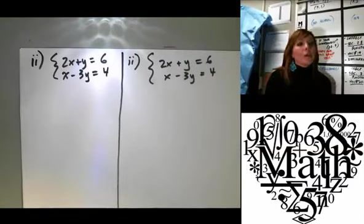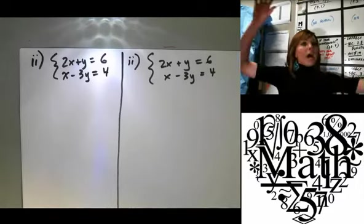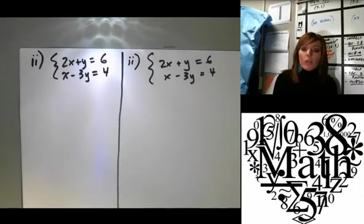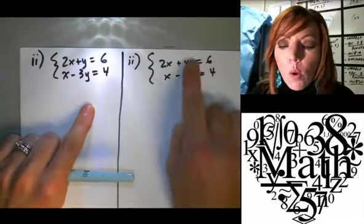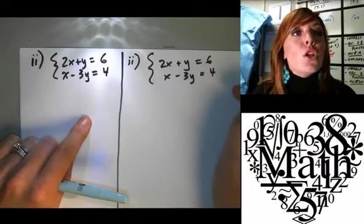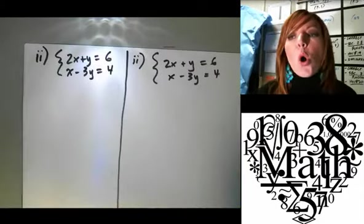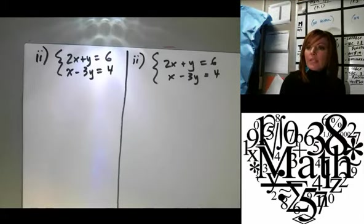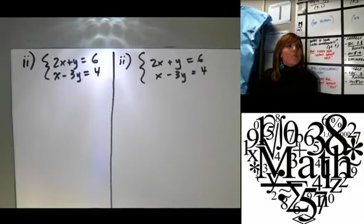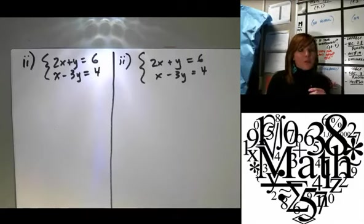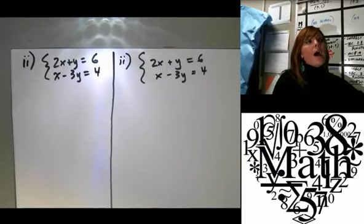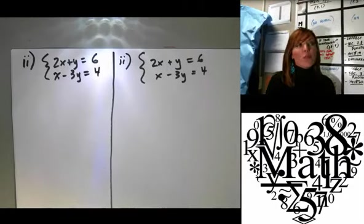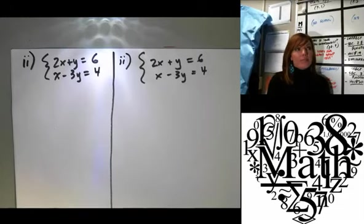Okay. So 2x plus y equals 6. And x minus 3y equals 4. So again, here's what we're doing. We want to look at the entire system as a whole. And right now, if we were to add all the x's together and add the y's, would anything cancel out? No. Okay. So our goal is to get something to cancel out. Does anyone have any suggestions about how we might be able to do that? Sonia? We can use substitution.